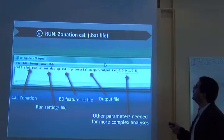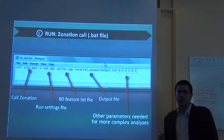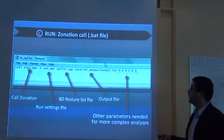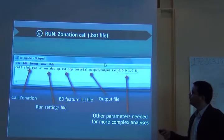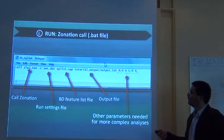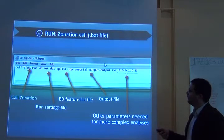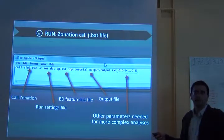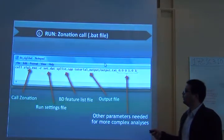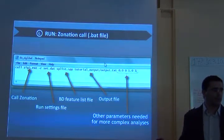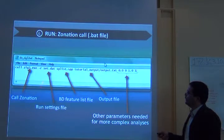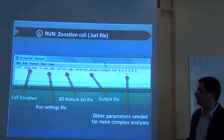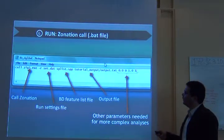And then you have this bat file. It is actually the zonation call. It's a command line that tells zonation to do the analysis. So you have your calling zonation here. That's the software. Zig3 executable. You have this negative r to say to zonation that you want to have a new run of zonation. Otherwise, you can just upload a previous analysis that you have done.